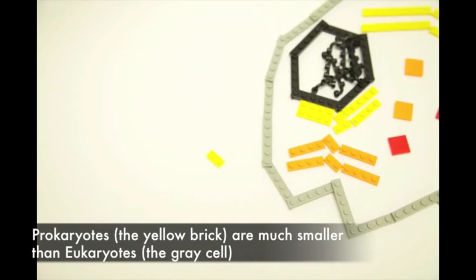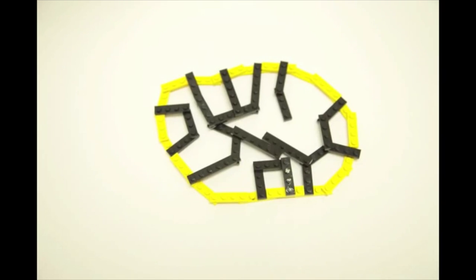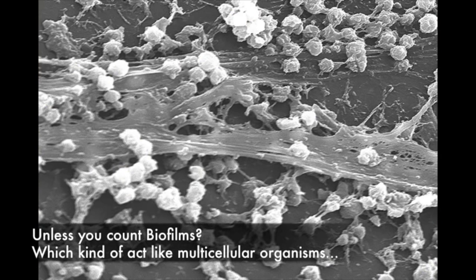Prokaryotes, on the other hand, like bacteria and archaea, tend to be much smaller than eukaryotes, and while they have cytoskeletons, they don't have a nucleus or any other organelles. This means that they can replicate themselves a lot faster than eukaryotes, but it also means that they don't generally form multicellular organisms, per se.